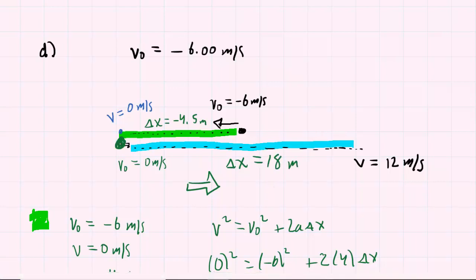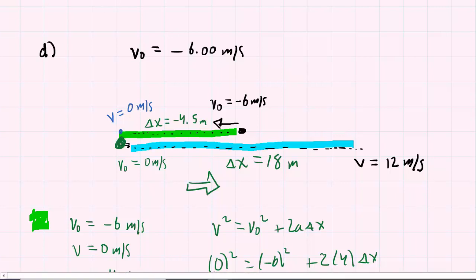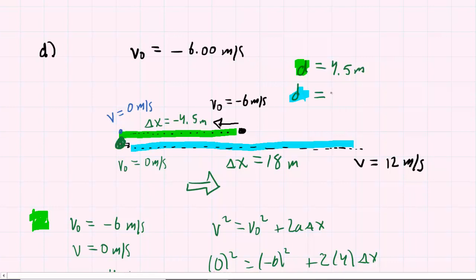Now for the total distance, it's important to understand that distance is always a positive quantity. So even though the displacement along the green path was negative 4.5 meters, the distance along the green path is positive 4.5 meters. The distance along the blue path was already positive at 18 meters. The total distance is simply the sum of these two: 4.5 plus 18 equals 22.5 meters. That is the final answer for part D.